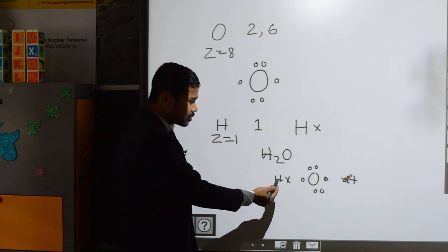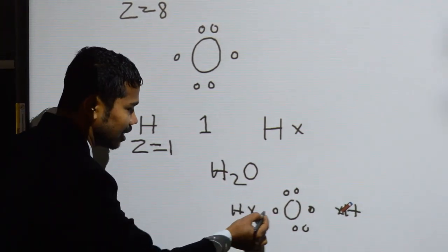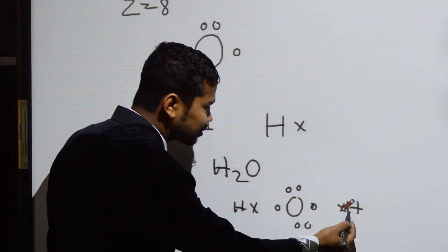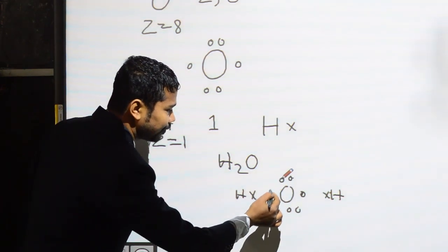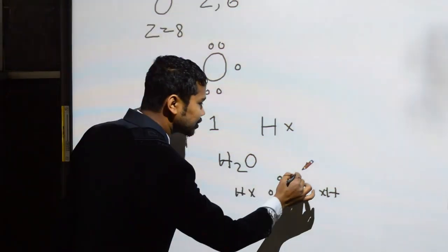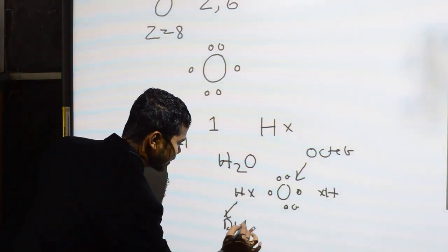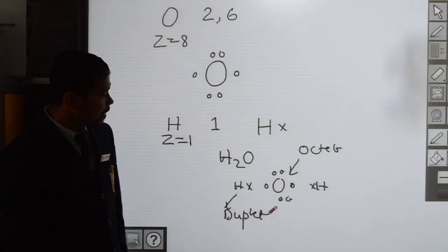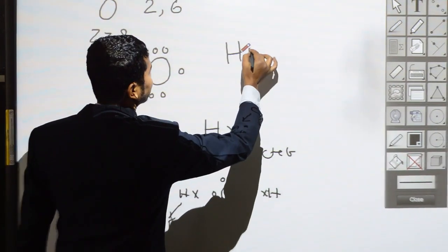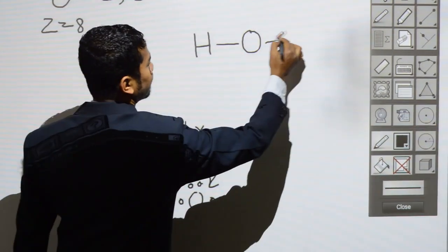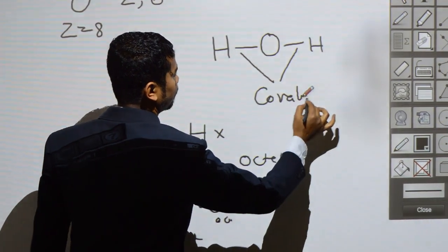Each hydrogen shares one electron with oxygen, and oxygen shares an electron with each hydrogen. As a result, each hydrogen completes its duplet, and oxygen completes its octet (1, 2, 3, 4, 5, 6, 7, 8). In this way they are stable. Both hydrogens form covalent bonds with oxygen.